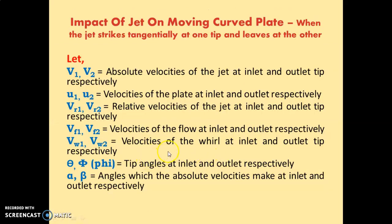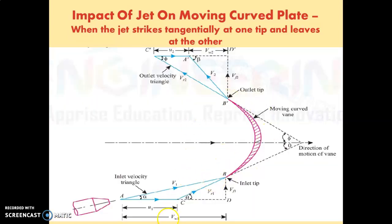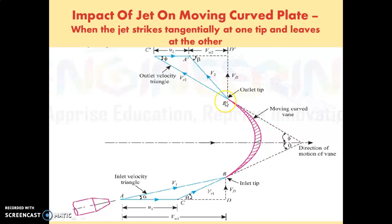Next, Vw1 and Vw2 — these are the velocities of the whirl at inlet and outlet tip respectively. Vw1 is the velocity of whirl at inlet, and Vw2 is the velocity of whirl at outlet. We will study all these velocities in detail in this lecture.